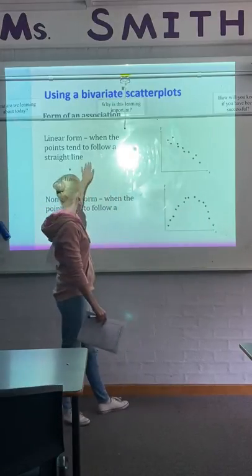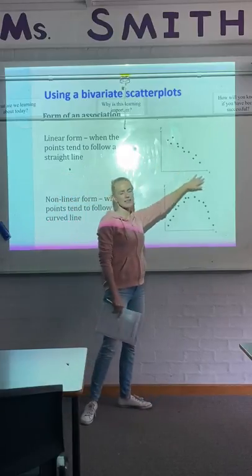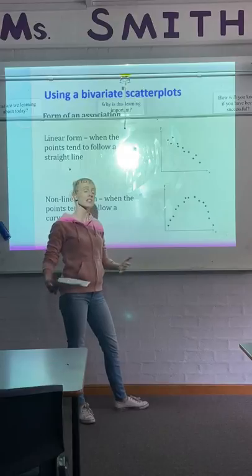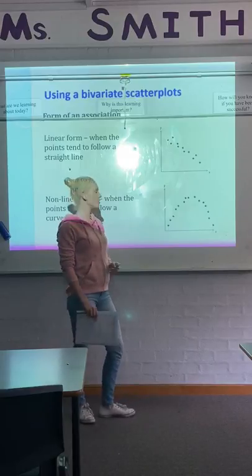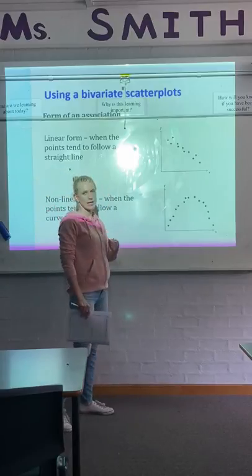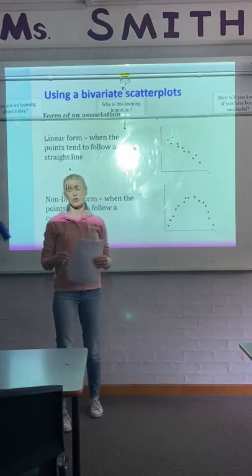So we generally say if something has a linear form, we can make a conclusion that there is an association or relationship between the two variables. So that's the first thing, the form. You've got linear or non-linear. You need to use those two words in your description.